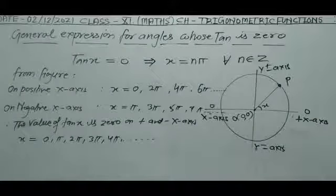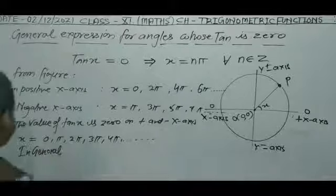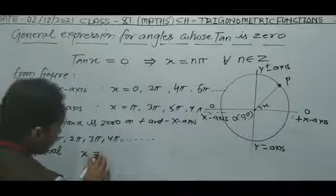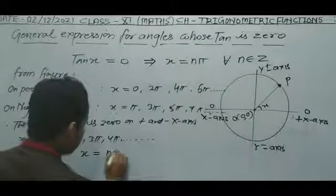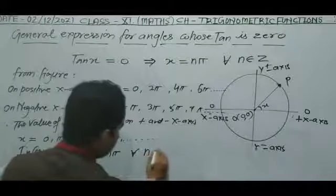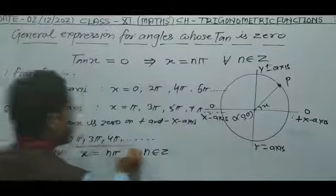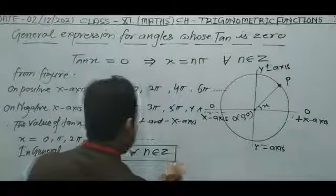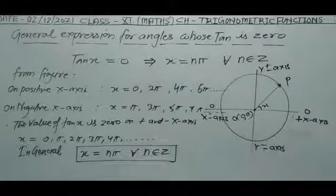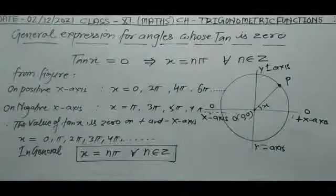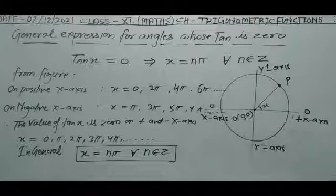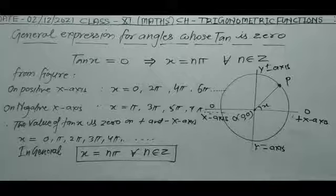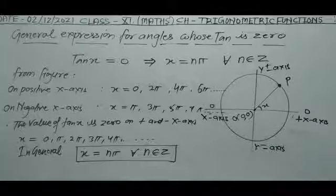So in general, x is equal to nπ, for all n belonging to integers. This is the formula. For sin x, cos x, and tan x, the general solutions are nπ and (2n+1)π/2 respectively.